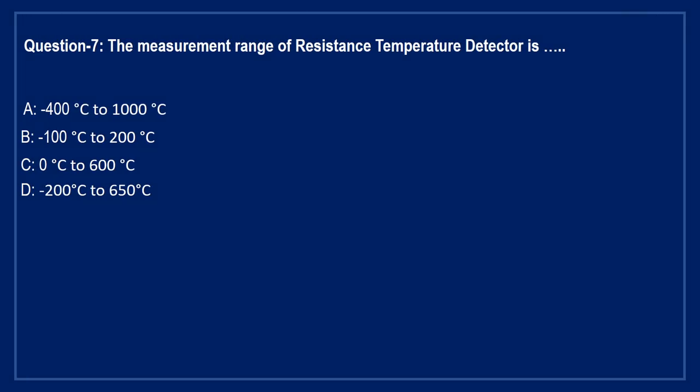Next question: the measurement range of resistance temperature detector or RTD is — Option A: minus 400 to 1000 degree centigrade. Option B: minus 100 to 200 degree centigrade. Option C: 0 to 600 degree centigrade. Option D: minus 200 to 650 degree centigrade.